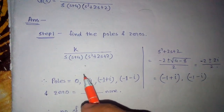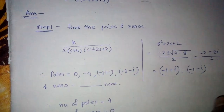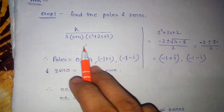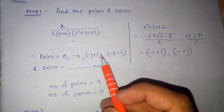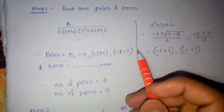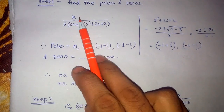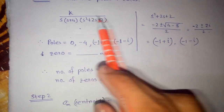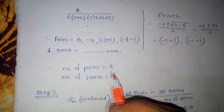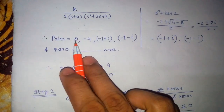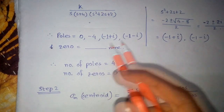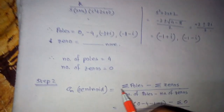The first step is to find out the poles and zeros. From this equation we can see that the poles will be s equals 0, s equals minus 4, and from here, by using Sridharacharya, another two poles will be minus 1 plus j and minus 1 minus j. We can see there are no zeros, because there is no numerator term. So the number of poles is 4 and number of zeros is 0.